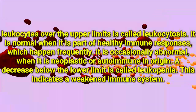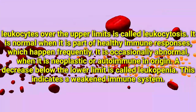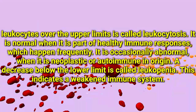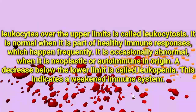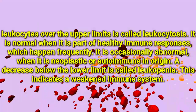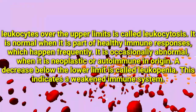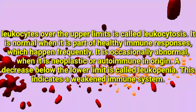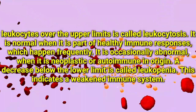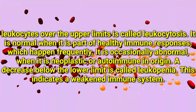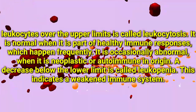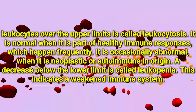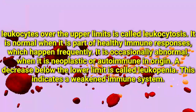An increase in the number of leukocytes over the upper limit is called leukocytosis. It is normal when it is part of a healthy immune response, which happens frequently, but is occasionally abnormal when it is neoplastic or autoimmune in origin. A decrease below the lower limit is called leukopenia, which indicates a weakened immune system.